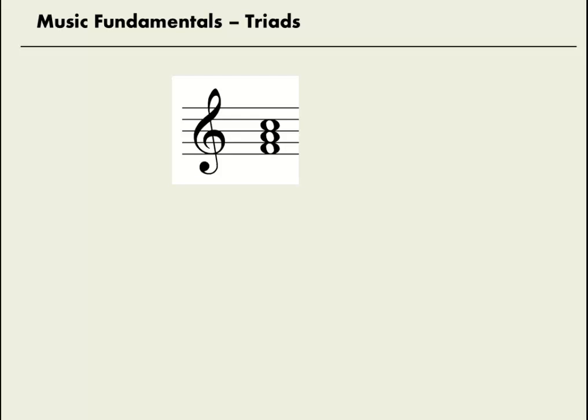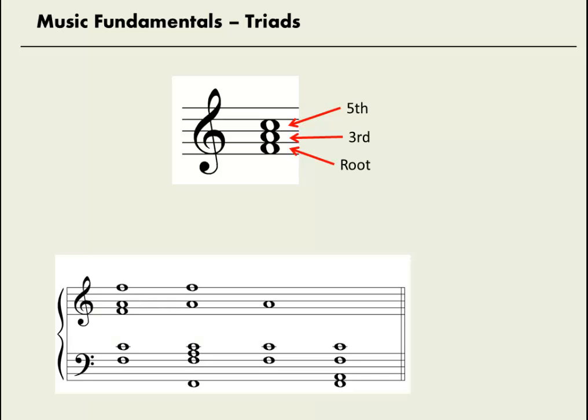Here's a triad with the pitches F, A, C. F is the root, A is the third, and C is the fifth. The pitches in this triad can be arranged in many different ways, but they're all F major triads.